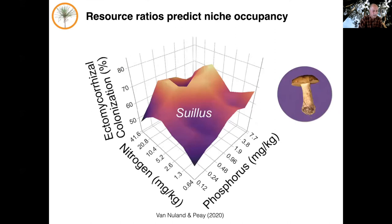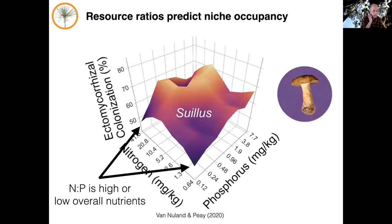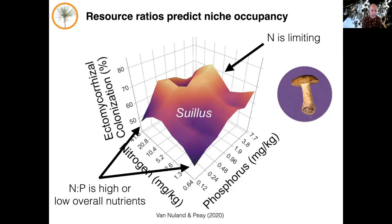This is the niche space we mapped out for Suellis pungens. A few things jump out right away. Colonization is lowest either when nutrients are at their absolute low, or where there's lots of nitrogen and not very much phosphorus — a high N-to-P ratio. By contrast, colonization is highest where phosphorus levels are very high but nitrogen levels are relatively low, so nitrogen becomes the most limiting nutrient. This is where Suellis seems to do best. It's actually the ratio of these two nutrients, as well as the absolute magnitude of their concentrations, that tends to predict niche occupancy for this fungus.